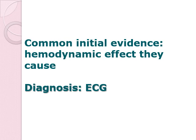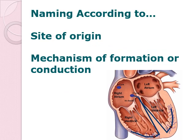Not all arrhythmias result in chest pain — unlike angina and myocardial infarction, wherein there will be chest pain. The diagnostic test for dysrhythmia is the ECG. The site of arrhythmia or dysrhythmia is named according to the site of origin and the mechanism of formation or conduction. Recalling our cardiac conduction system, it starts with the SA node, followed by the AV node, going towards the bundle of His and then the Purkinje fibers.